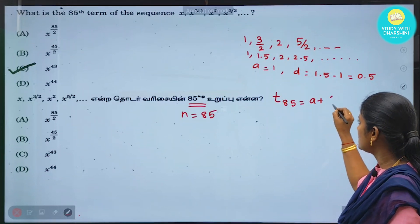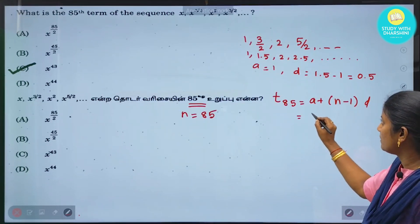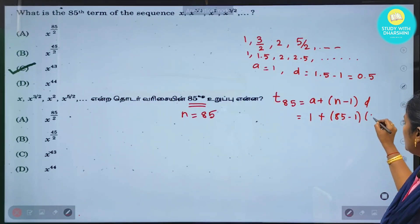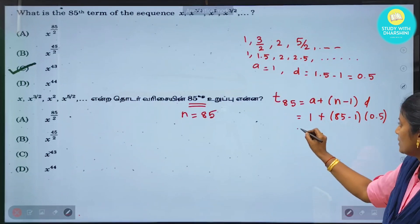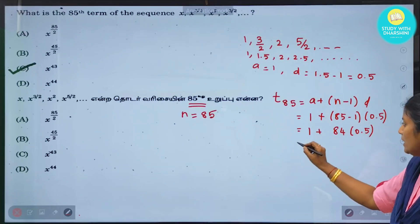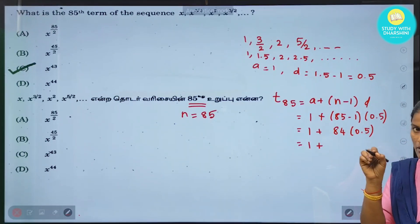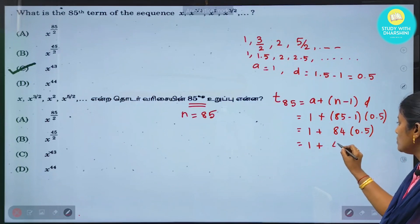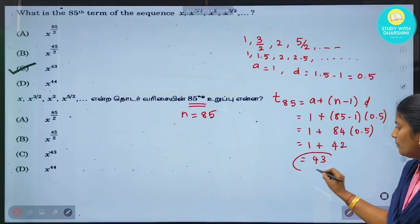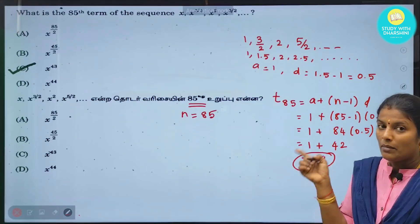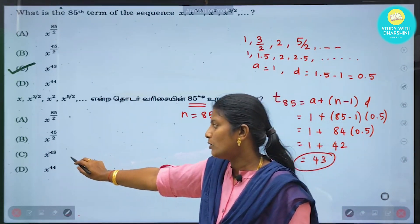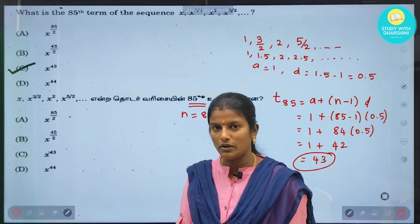Using Tn = a + (n-1)d, we replace the power: 1 + (85-1) × 0.5 = 1 + 84 × 0.5 = 1 + 42 = 43. So the 85th term is x^43. The answer is option C: x^43.